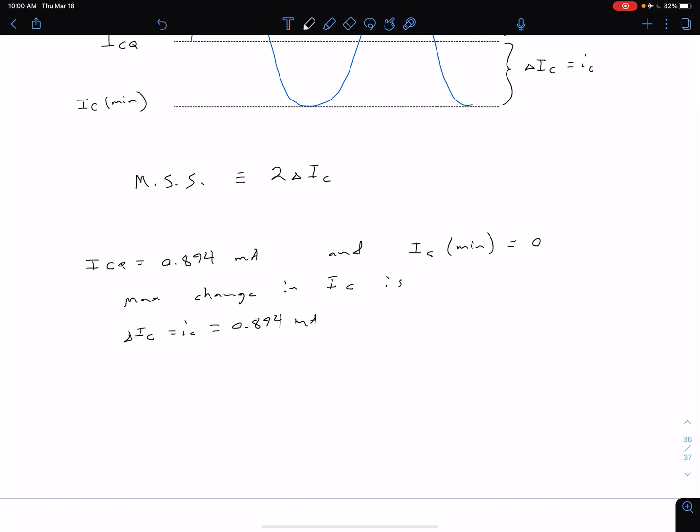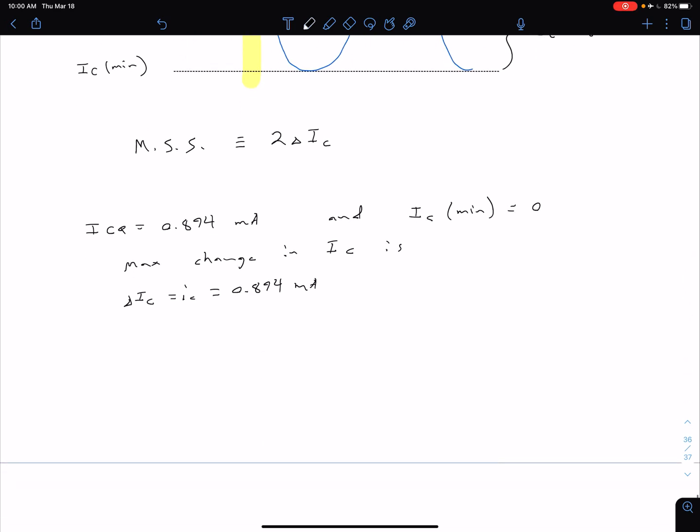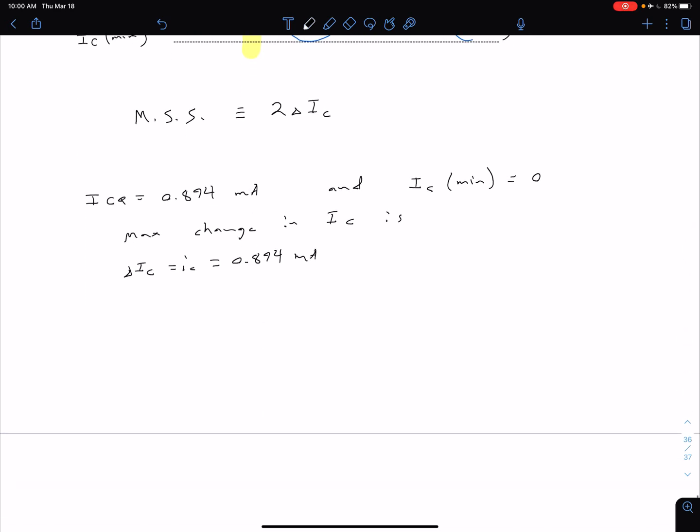That 0.894 milliamps is the change from ICQ to IC min. But if we want to talk about maximum symmetrical swing, we have to add the other half as we're going from ICQ to IC max. So we would say that this corresponds to a maximum symmetrical swing of two times that 0.894 or 1.79 milliamps.